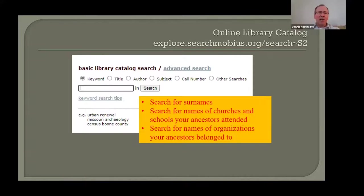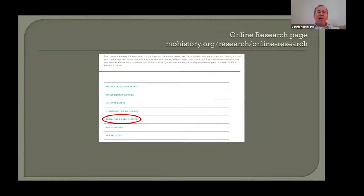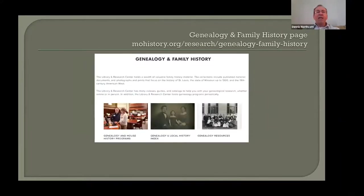One last thing on our online research page: if you click Genealogy and Family History, you'll come to our genealogy and family history page — probably the best page on our website to start your research. In the bottom right corner, clicking the Genealogy Resources link takes you to a page I've compiled with brief descriptions and links to all the great databases at other repositories for researching your St. Louis ancestors. For example, there's a link to the wonderful Missouri State Archives death certificates database, which contains indexed and digitized death certificates for the entire state of Missouri from 1910 to 1969.